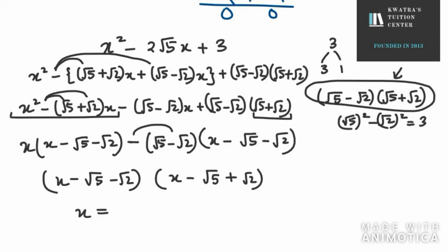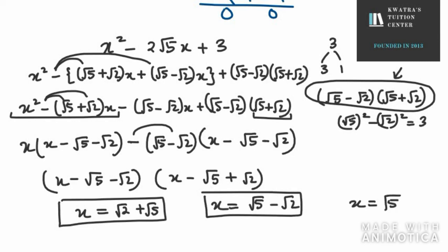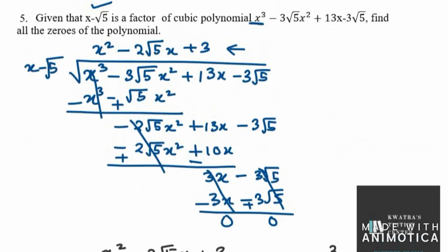From the first factor we get the second zero: x equals √5 plus √2. The third zero is x equals √5 minus √2. The first zero, √5, came from the given factor itself. So these are the three zeros for question number 5. Thank you for watching this video, have a great day.